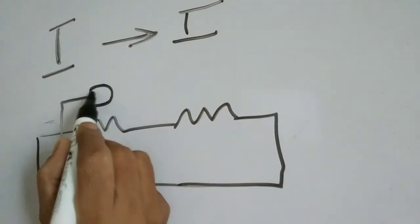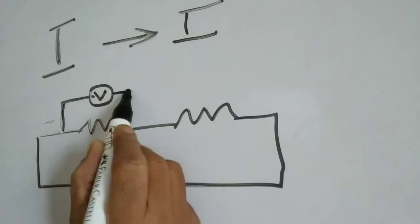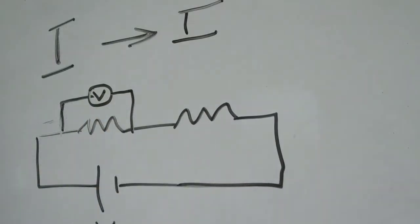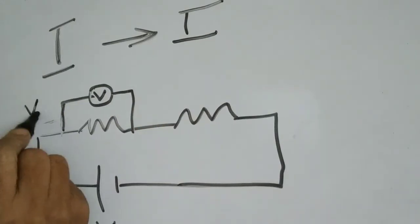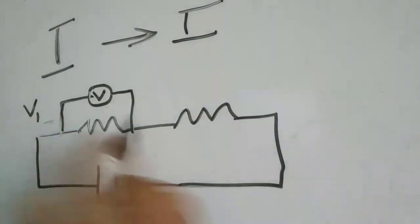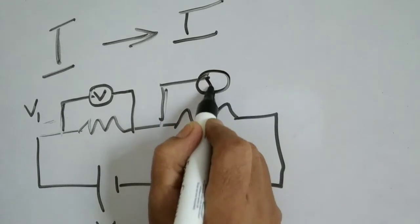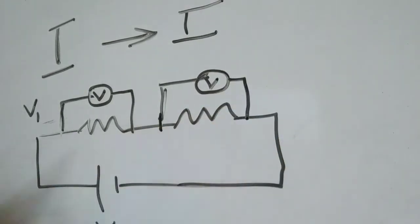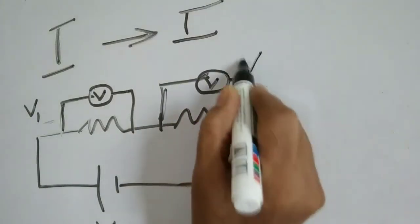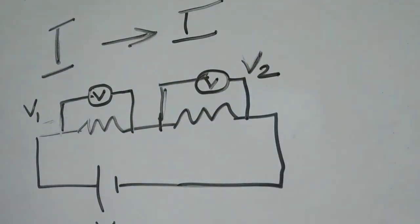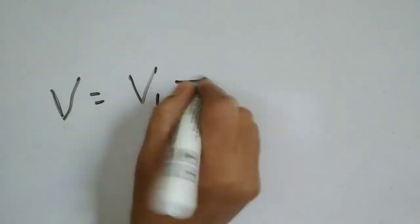The voltage of the cell is V. The voltmeter should always be connected parallel to the circuit. I connect a voltmeter to note the reading — that will be different. Let V1 be the potential difference here. Again I connect another voltmeter across this second resistor, and it also gives another reading. Let V2 be the potential difference here.